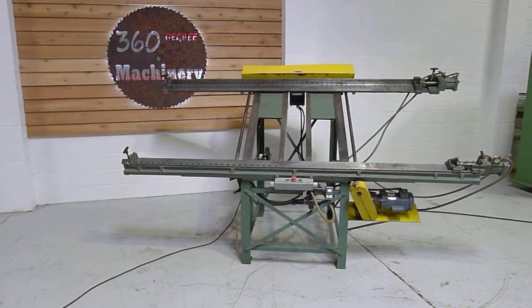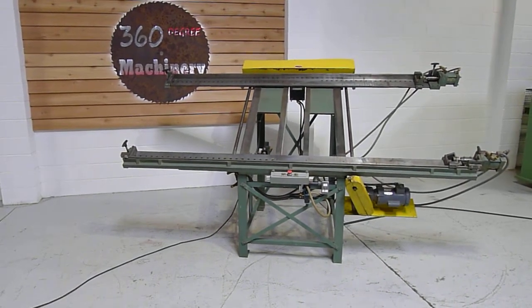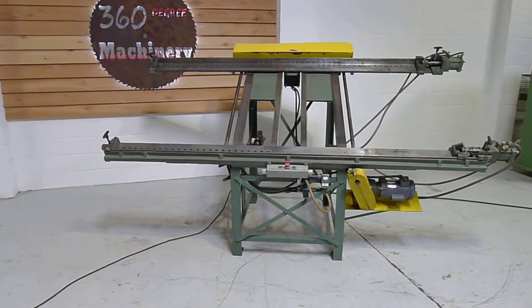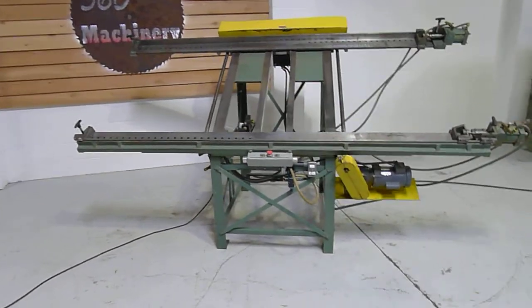Welcome to 360 degree Machinery. We're going to do a walkthrough of a Lancaster two-way frame and door clamp. It's a model 1861.